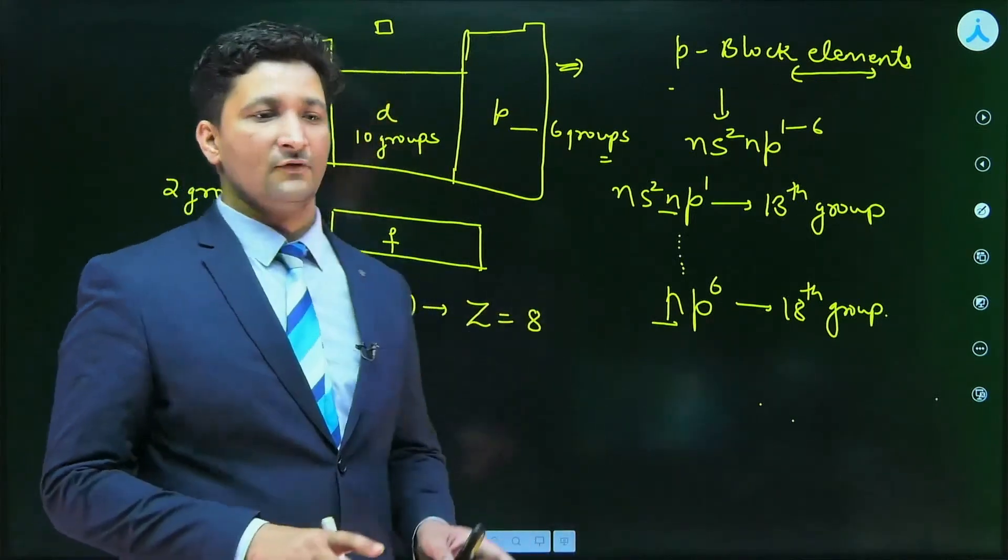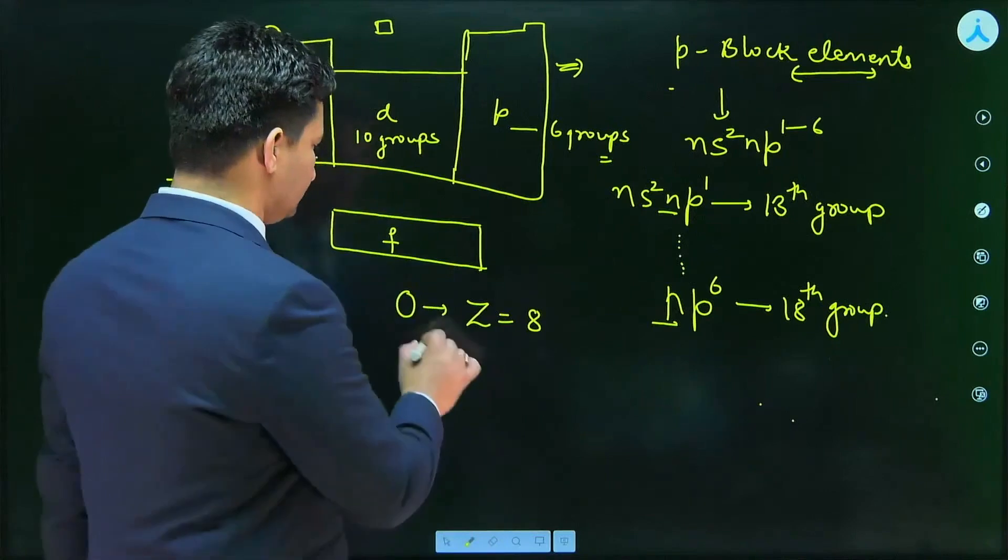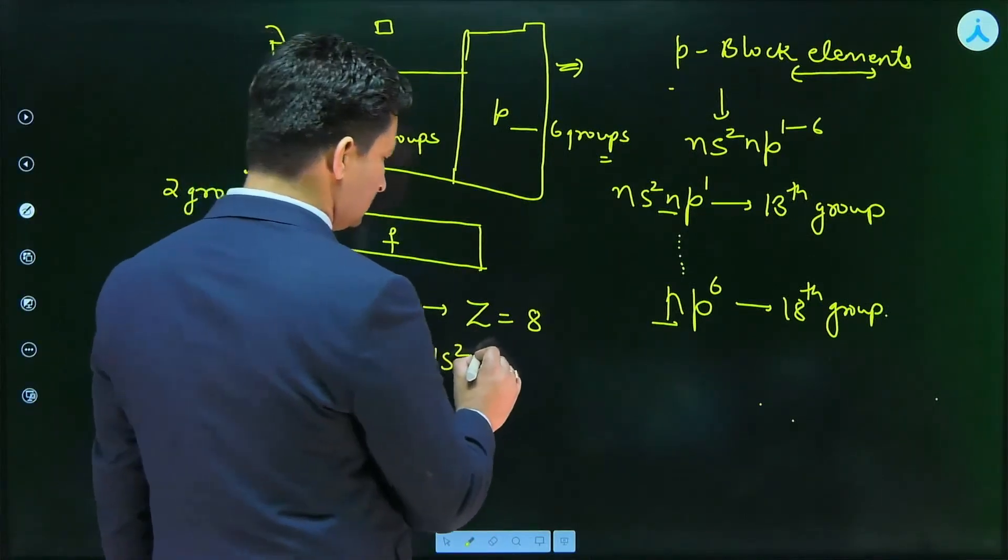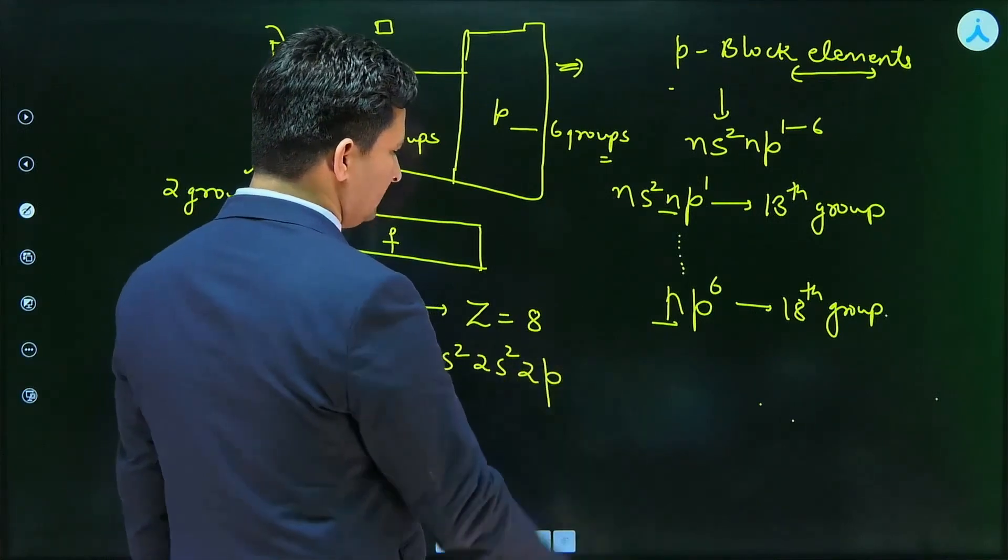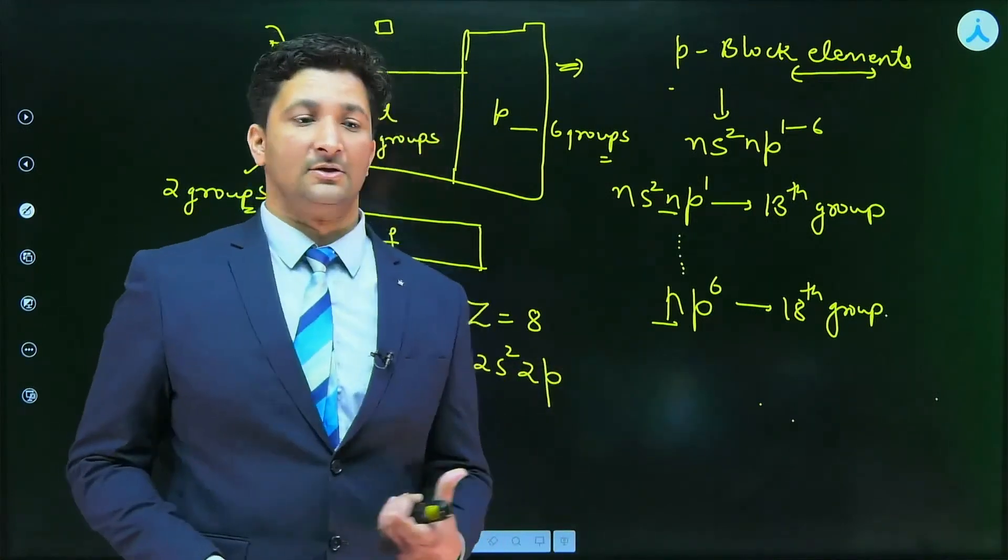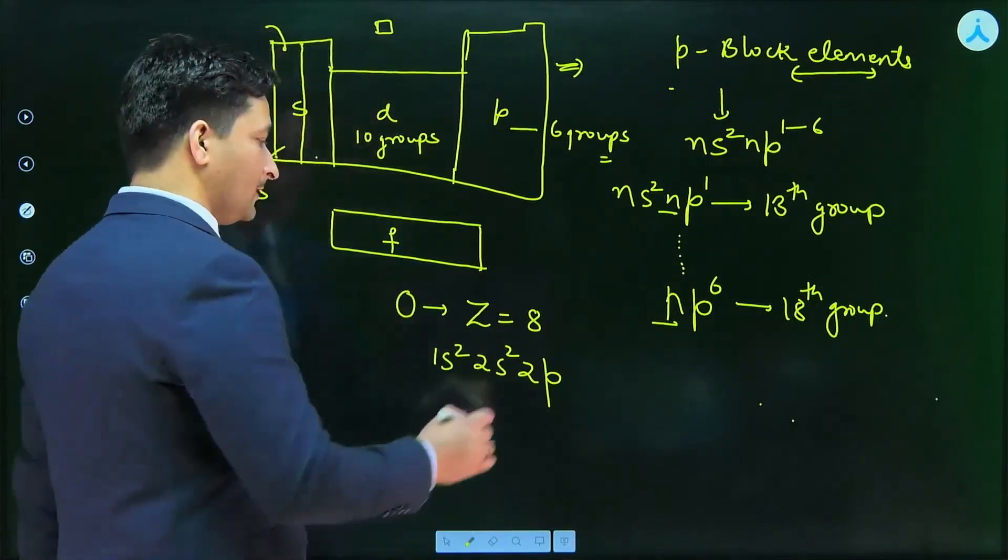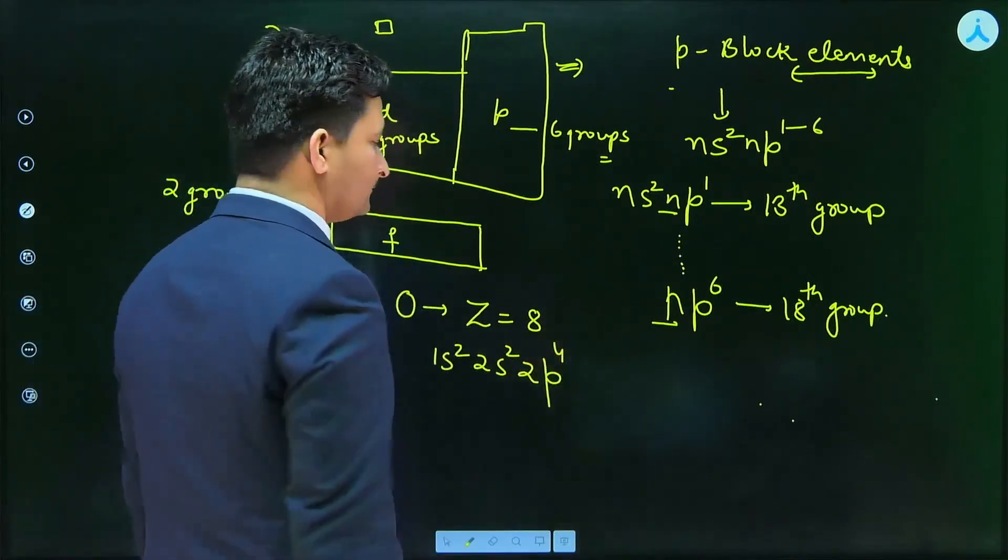So first of all, we have to write the electronic configuration. Electronic configuration is 1S2, 2S2, 2P. Now, P can accommodate maximum of 6 electrons, but we have only 8 electrons. So 2P4.